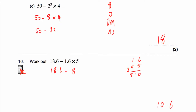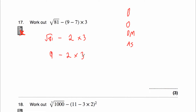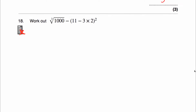Question 17: work out √81 subtract (9 minus 7) multiplied by 3. Brackets first: 9 take away 7 is 2. Now orders: the square root of 81 — 9 times 9 is 81, so √81 is 9. We have 9 minus 2 times 3. Next, the multiplication: 2 times 3 is 6. Finally, 9 minus 6 is 3. Our answer is 3.